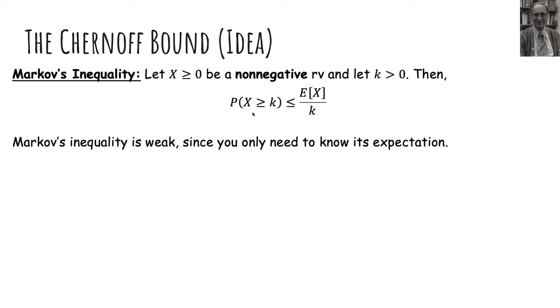So recall Markov's inequality. It said that if x is a non-negative random variable, then the probability it's greater than or equal to k is at most something. And this is not too strong of a bound because the only thing we assume to know about the distribution is that it's non-negative and that we know its expectation.